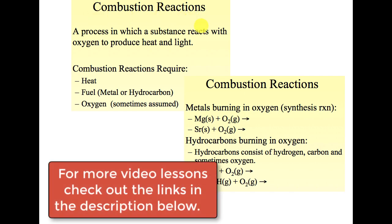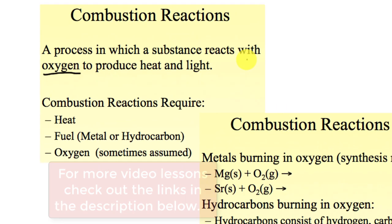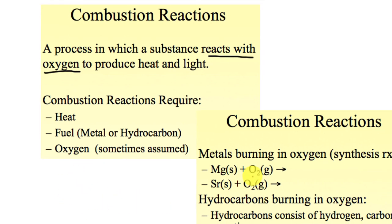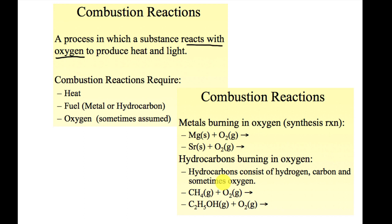How does combustion happen? It's a process in which something reacts with oxygen. In order for things to combust, oxygen must be present. We also need heat added and a fuel. You must know that combustion is sustained with O2 — you'll see O2 appear in all these reactions.